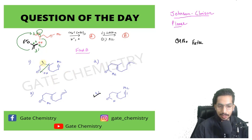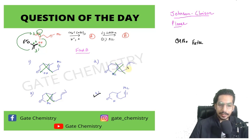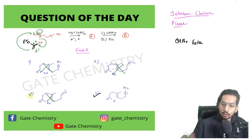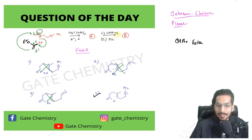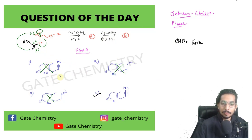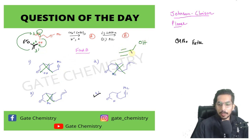Looking at the four answer choices: one shows a carboxylic acid — incorrect; two show ketones — also incorrect. Now there are two more important concepts to discuss beyond this question. First: lithium aluminium hydride can reduce a triple bond, provided a propargylic alcohol is present.